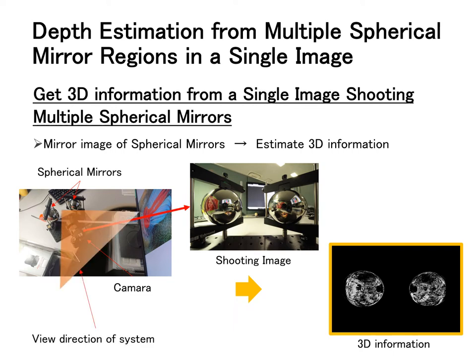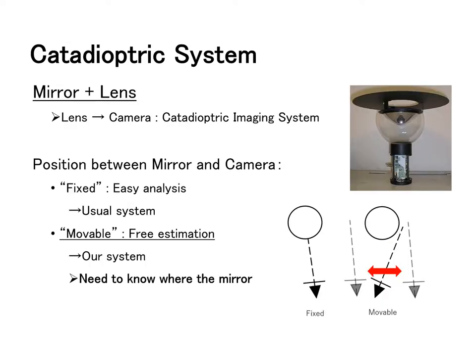This system is able to acquire the scene information. The system consisting of the mirror and the camera used in this research is called catadioptric system. Especially system using a camera as a lens is called catadioptric imaging system. It is used in omnidirectional camera.